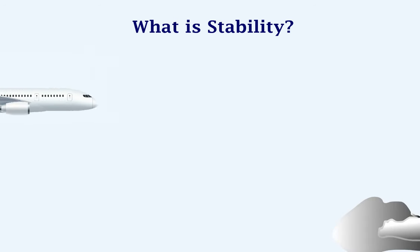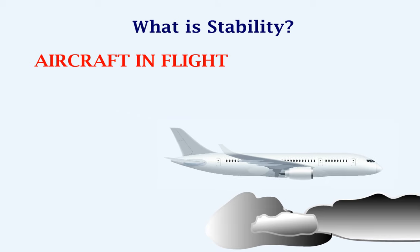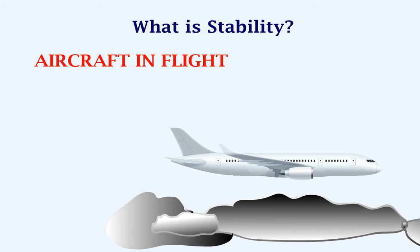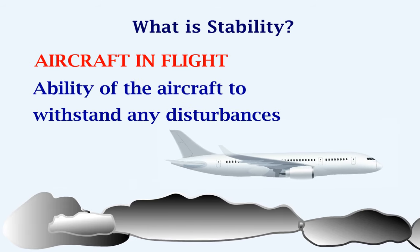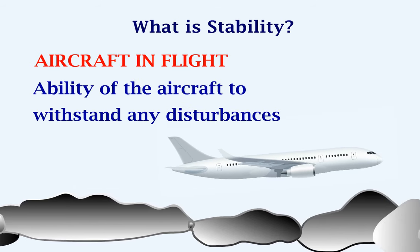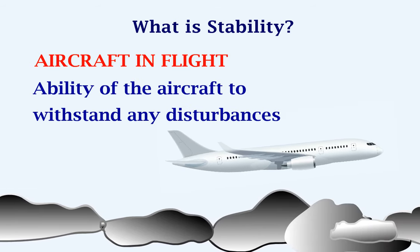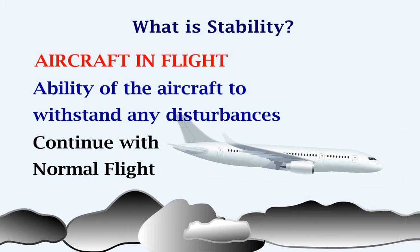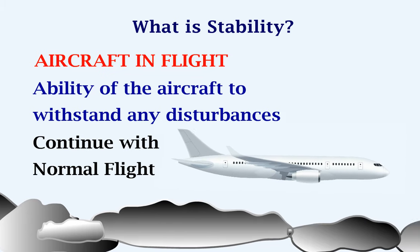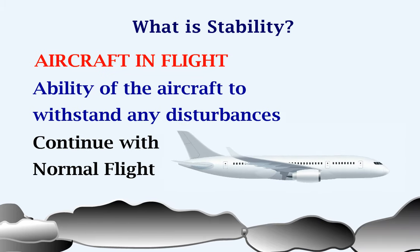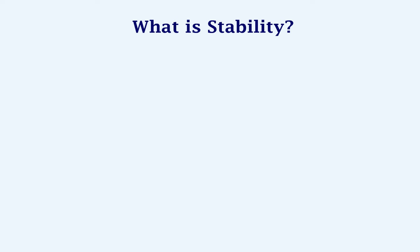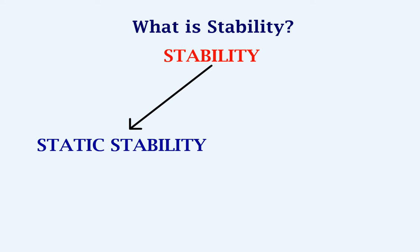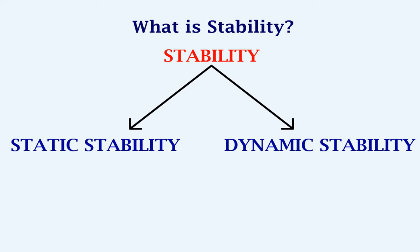Let's consider an aircraft in flight. The ability of this aircraft to withstand any disturbances and continue its normal flight is called stability. Stability can be classified into static stability and dynamic stability.